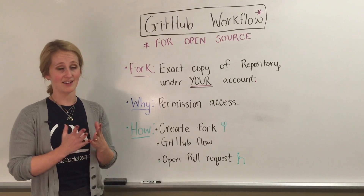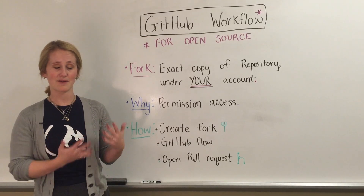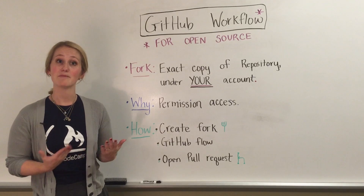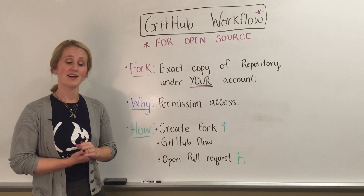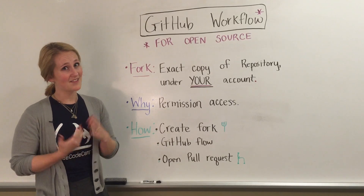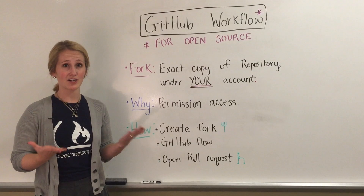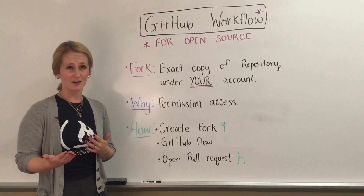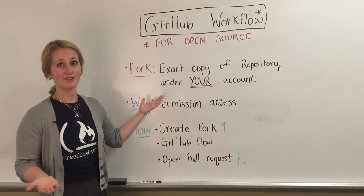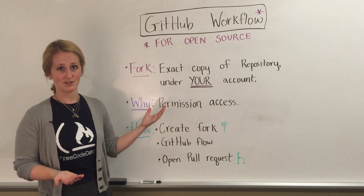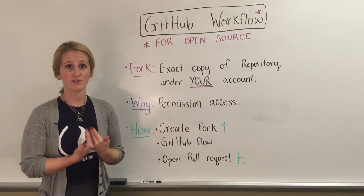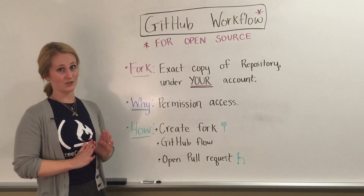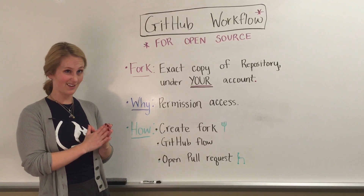So we talked about the GitHub workflow — how you branch, introduce changes on commits, and then merge your branch back into master. But that only works if you're working on a project that you have write access to. Maybe you're working on a project that you don't have collaborator access to, like if I wanted to make changes on FreeCodeCamp. That's when you would need the open source workflow, which includes forking.